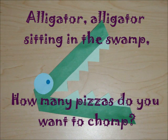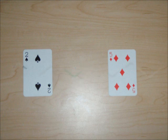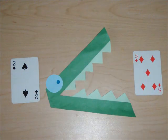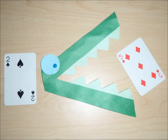Alligator, alligator sitting in the swamp, how many pizzas do you want to chomp? Two or five? Hmm, I'm a very very hungry alligator, so I'll eat whichever one is greater. Five is greater than two. Two is less than five. I'll eat five. Yum!